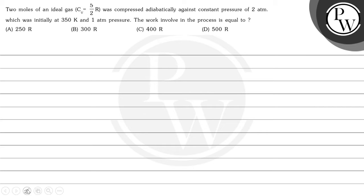Hello Bachchon, let's read this question. Question says: 2 moles of an ideal gas, CV equals 5/2 R, was compressed adiabatically against a constant pressure of 2 atm, which was initially at 350 Kelvin and 1 atmospheric pressure. The work involved in the process is equal to — options are 250R, 300R, 400R, or 500R.